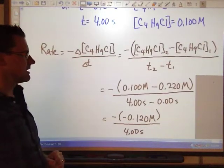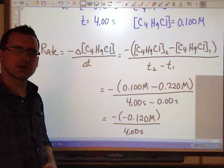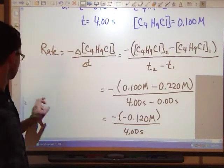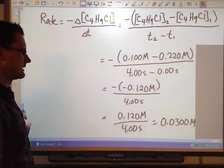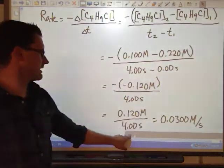Doing that operation, 0.100 minus 0.220, I get negative 0.120 molar. And of course, 4 minus 0 is 4.